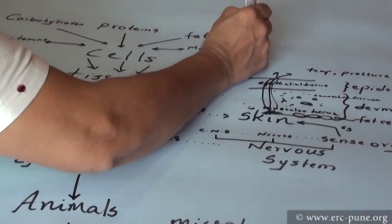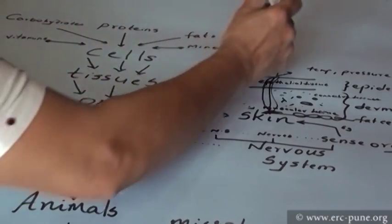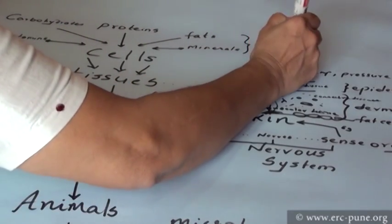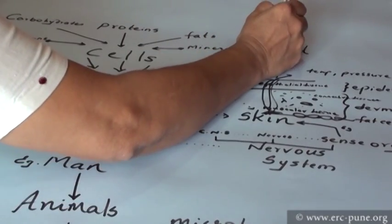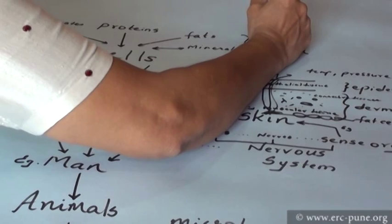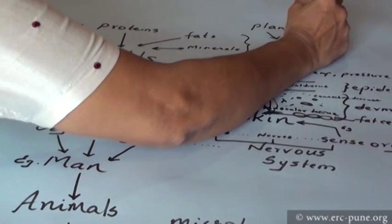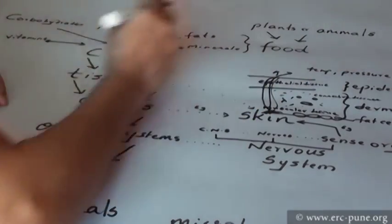Where do we get all these things from? As soon as we say the words carbohydrates, proteins, fats, minerals, and vitamins, the word that comes to your mouth is food. Where do we get this food from?